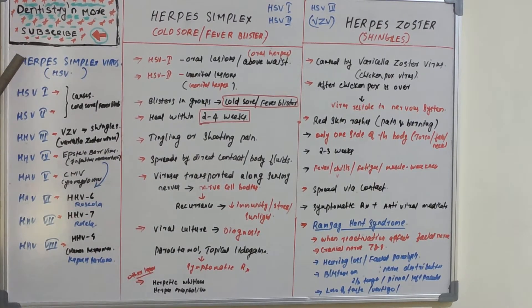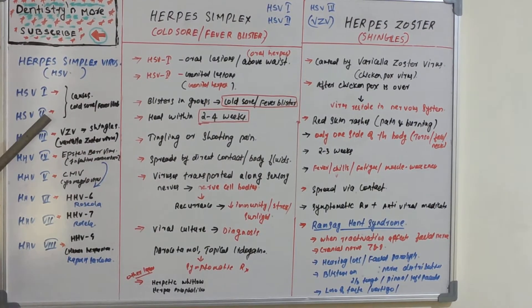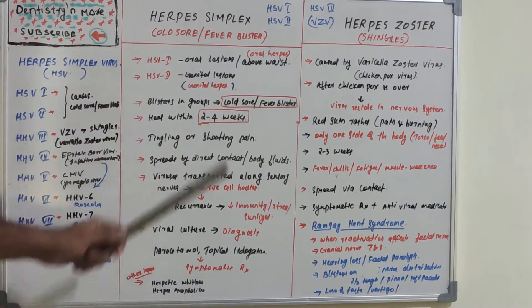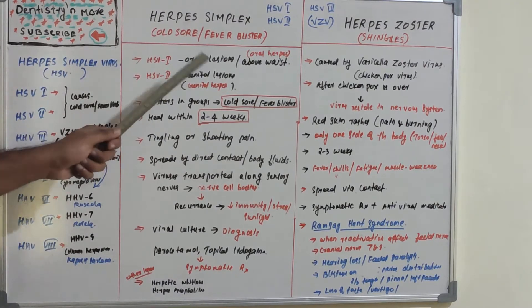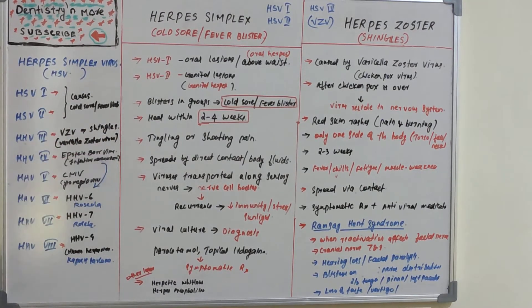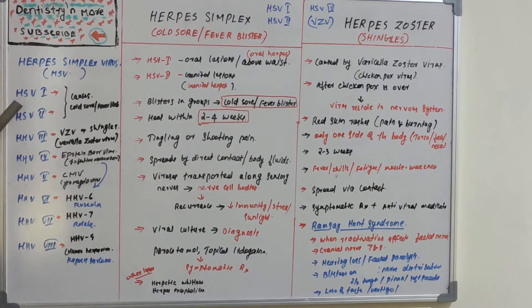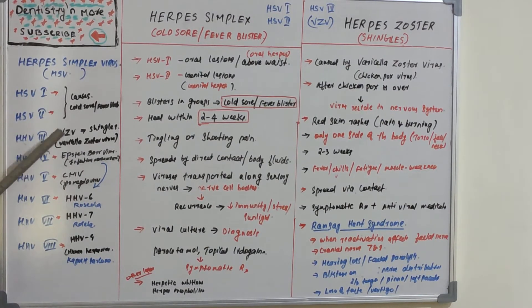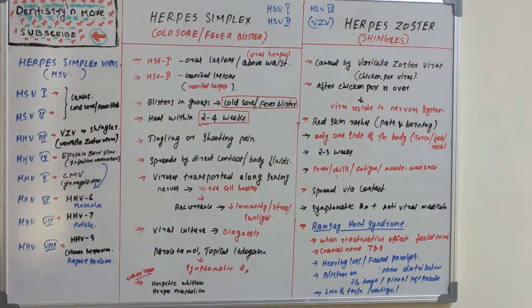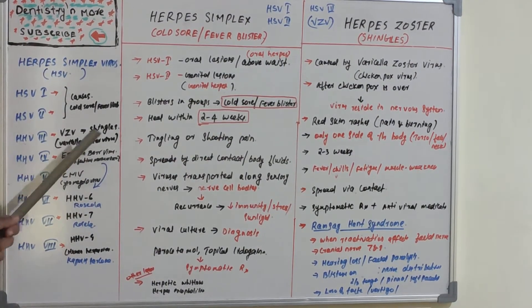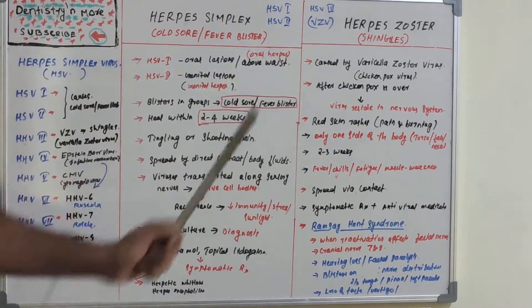Herpes simplex virus 1 and 2 cause herpes simplex disease. HSV1 causes oral lesions and HSV2 causes genital lesions. Human herpes virus 3 is also known as varicella zoster virus, which causes herpes zoster, chicken pox, or shingles.